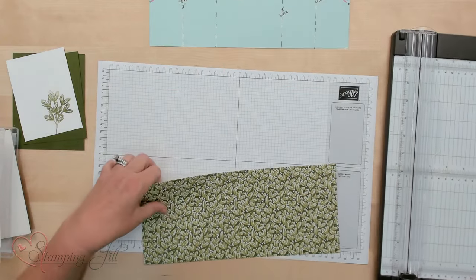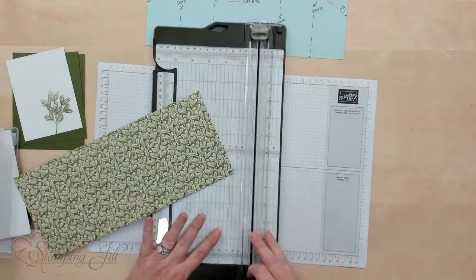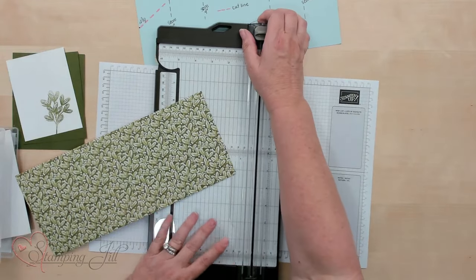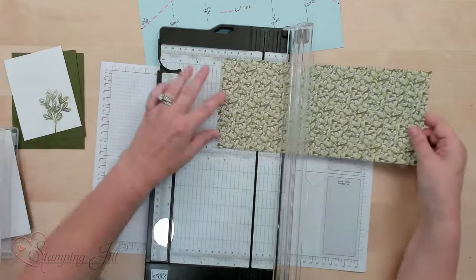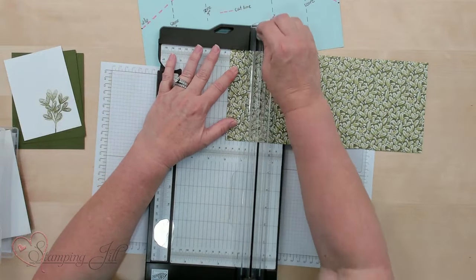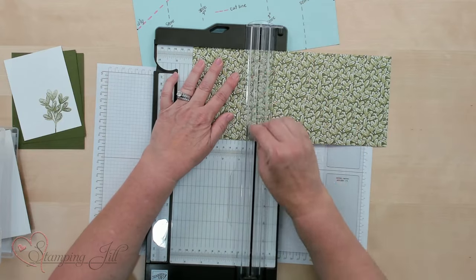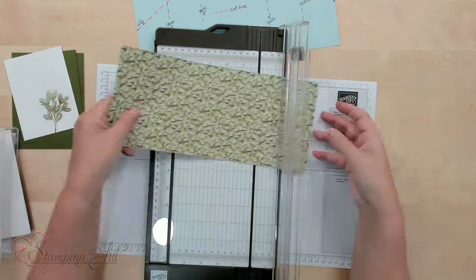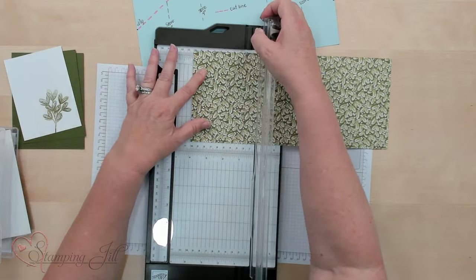I'm going to get my Stampin' Trimmer over here and I'm going to start with the scoring tool and right here I want to make sure that my cutting tool is out of the way so I don't make the mistake of cutting it. So I'm going to start with the 2 inches score and go to the next 2 inches which is at 4 inches and then I'm going to flip this around and go 2 again and 4.